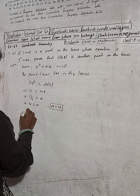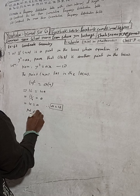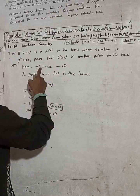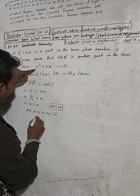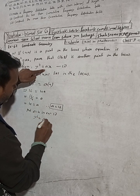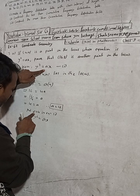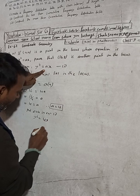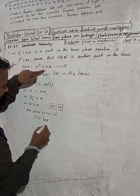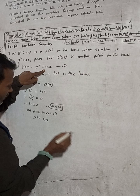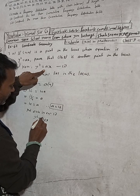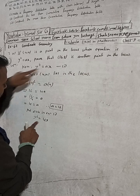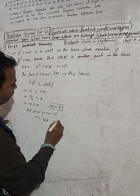Now put a = 4 in equation 1. When we substitute a = 4, the equation y² = ax becomes y² = 4x. Therefore this y² = 4x is our equation 2.